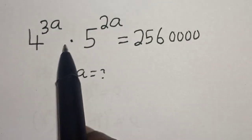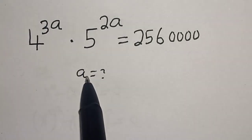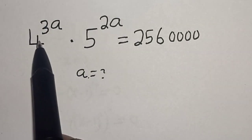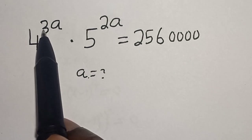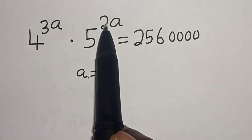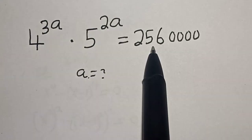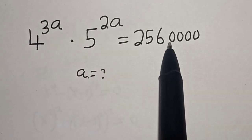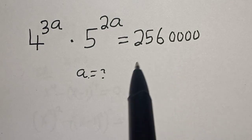Hello, welcome to Mages. In this class we want to find the value of 'a' from this equation: 4 raised to power 3a multiplied by 5 raised to power 2a is equal to two million five hundred and sixty thousand.